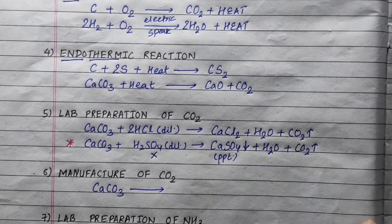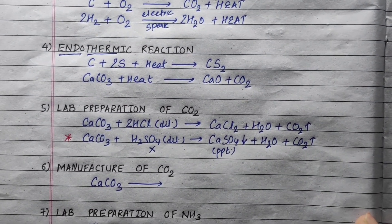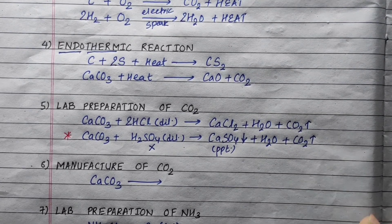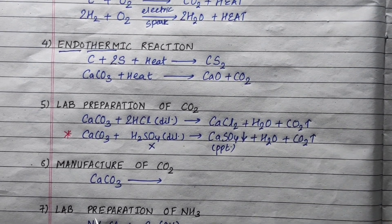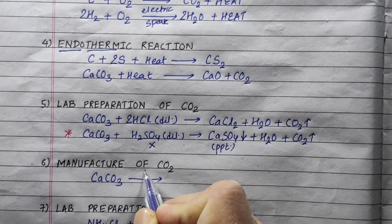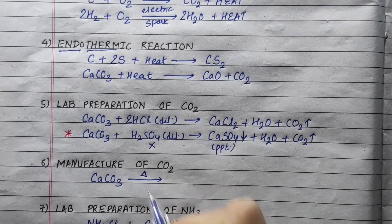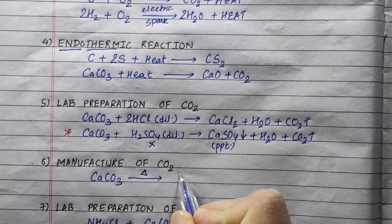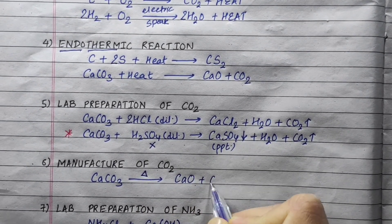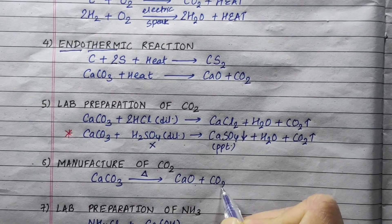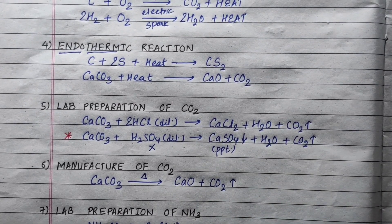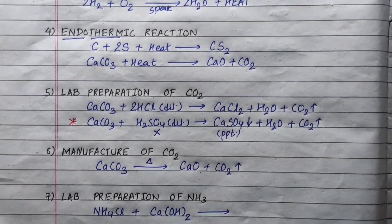For the industrial preparation of carbon dioxide, we heat calcium carbonate. This produces calcium oxide and carbon dioxide: CaCO₃ → CaO + CO₂.